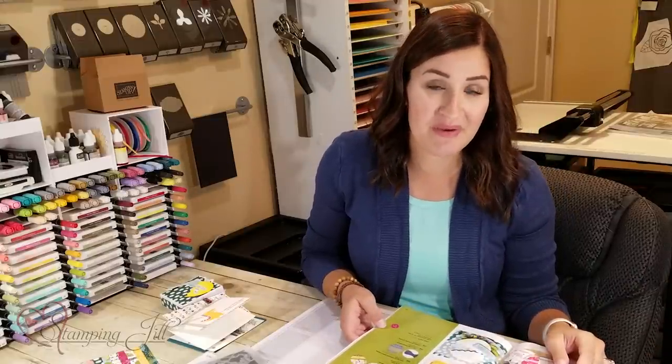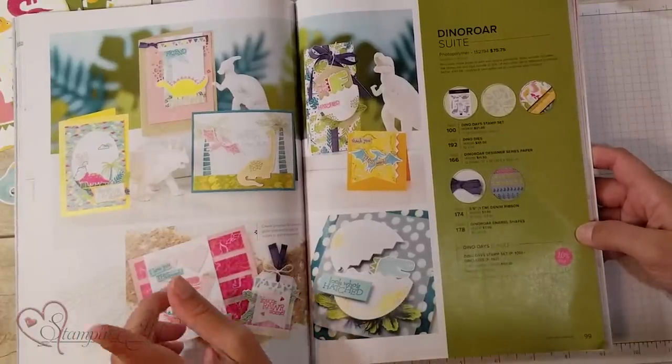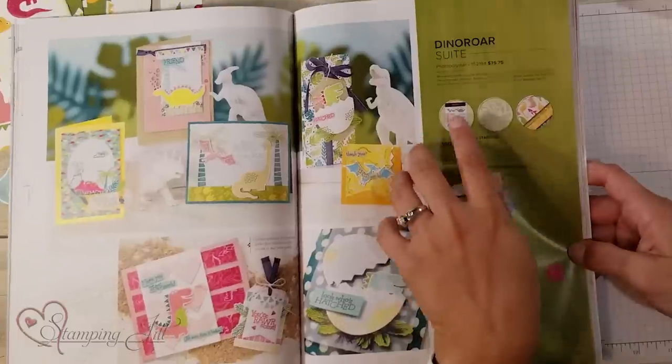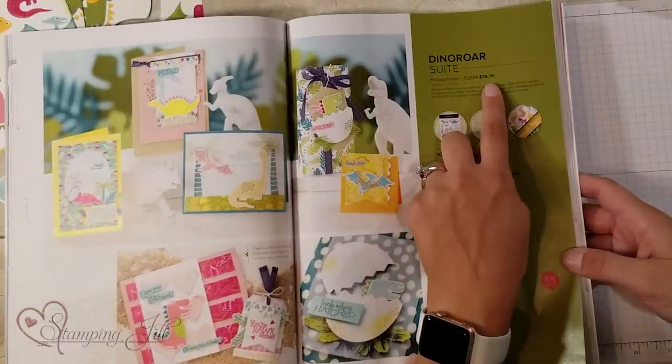There's a new feature in this annual catalog that Stampin' Up! is offering. You can order the entire suite of products with just using one item number. So if you love all of the products I'm going to show you today, you can just use one item number to order the entire suite for $75.